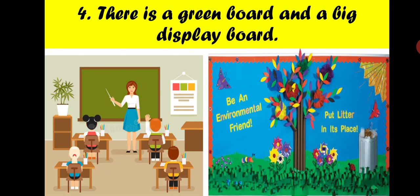The next line is: there is a green board and a big display board. If you have noticed, the chalkboard where your teacher writes is green in colour — that's why it is called a green board. Earlier it used to be black in colour, which is why we called it a blackboard. So the name of the board depends on the colour of the board.